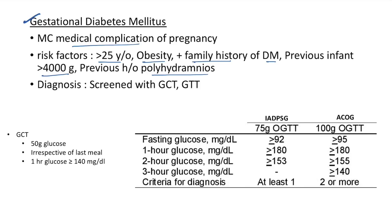For diagnosis of GDM, we can do a glucose challenge test (GCT) and glucose tolerance test (GTT). In the GCT, we give 50 grams of glucose irrespective of last meal and measure blood glucose at 1 hour. If blood glucose is ≥140 mg/dL, it is highly suggestive of GDM and the patient should be subjected to an oral glucose tolerance test. Nowadays GCT is often skipped and OGTT is done directly in the second trimester.